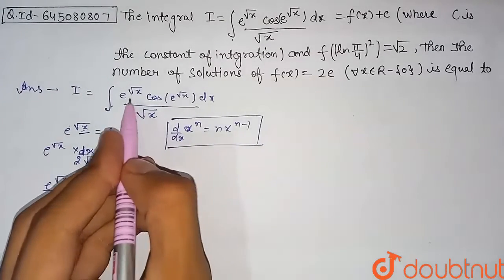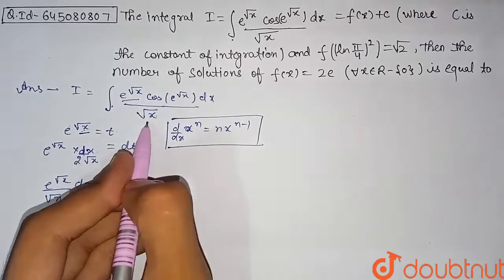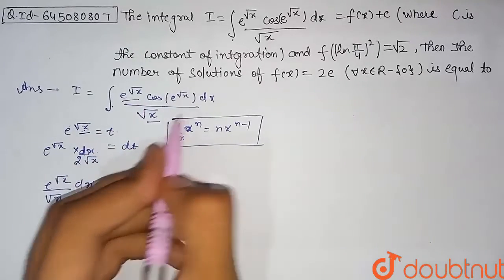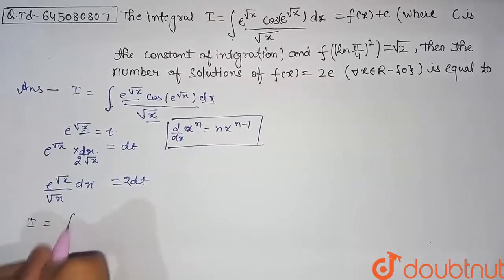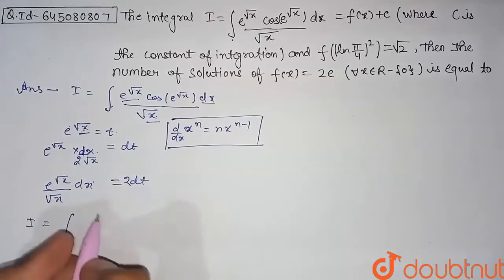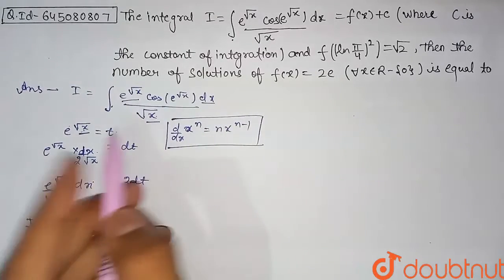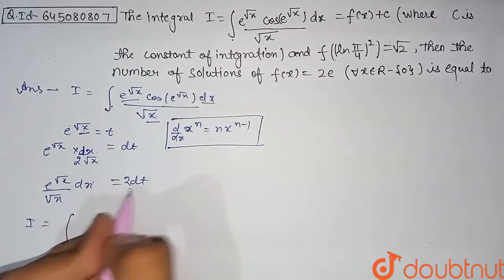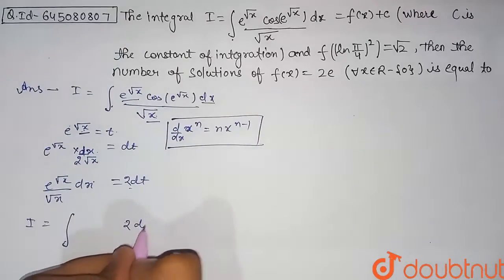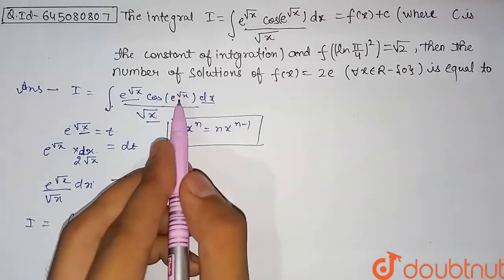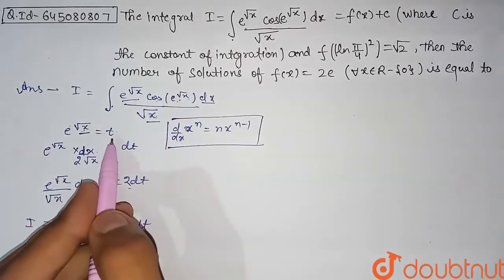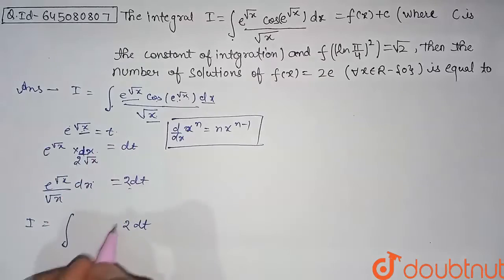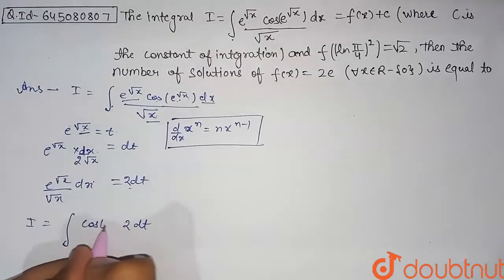From the substitution, we can say that 2 dt = e^(√x)/√x · dx. So we replace the term e^(√x)/√x · dx with 2 dt. Our integral I becomes the integration of 2 dt · cos(t), since e^(√x) is substituted as t, giving cos(t).